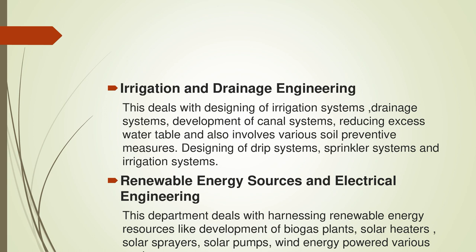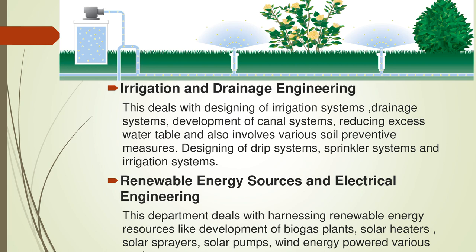Next is Irrigation and Drainage Engineering. This deals with the designing of irrigation systems, drainage systems, development of canal systems, reducing excess water levels, and also involves various soil preventive measures. This includes designing of drip systems, sprinkler systems, and irrigation systems.